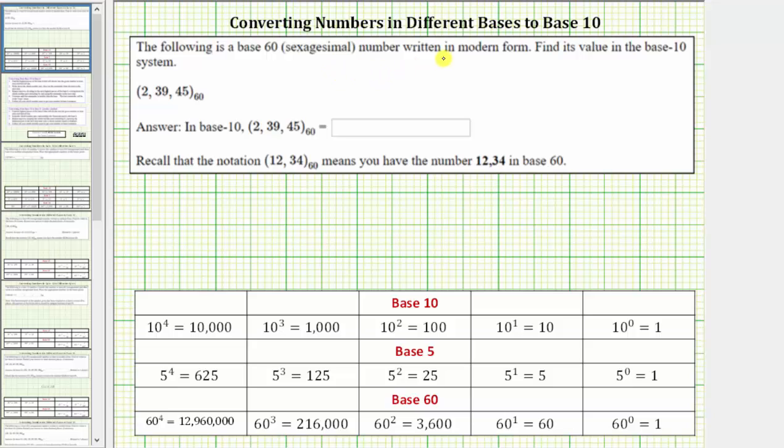The following is a base 60 number written in modern form. Find its value in the base 10 system. We are given 2, 39, 45 in base 60.